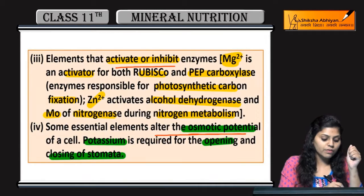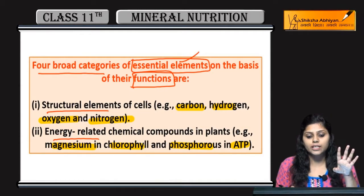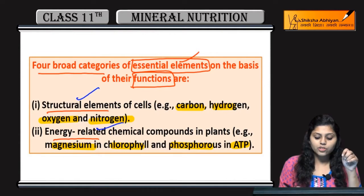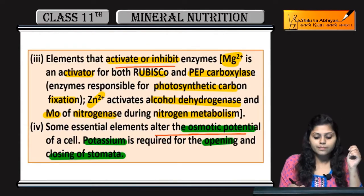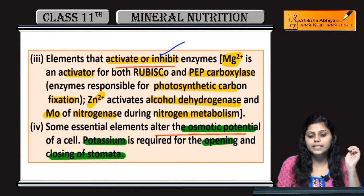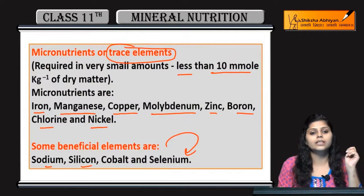So, on the basis of their function, essential elements are divided into four categories: structural elements, energy-related chemical compounds, elements that activate and inhibit enzymes, and elements that alter osmotic potential.